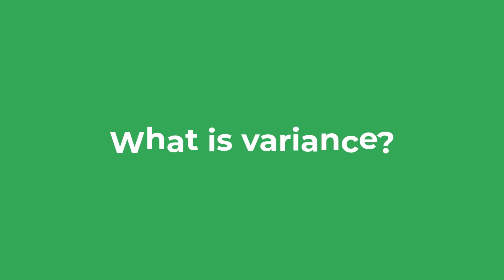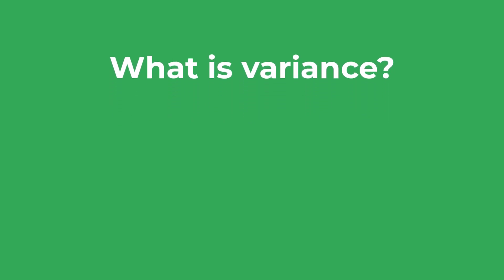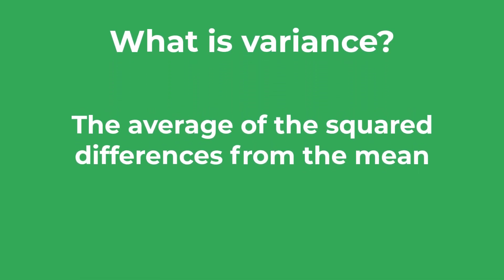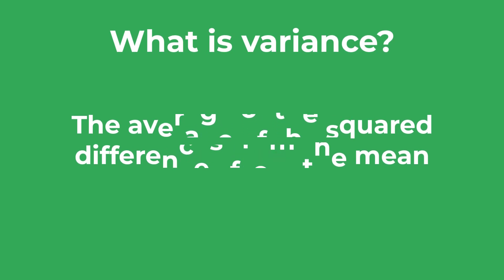What is variance? The actual definition of variance is the average of the squared differences from the mean. To explain what this actually means let me give you a simple example to show how it is calculated.